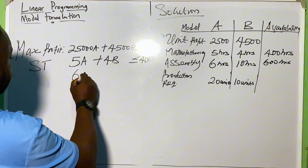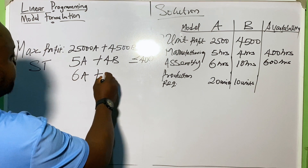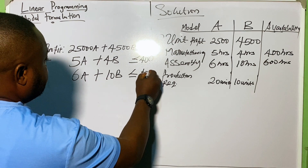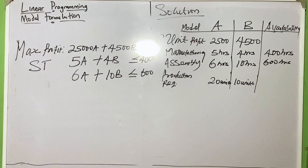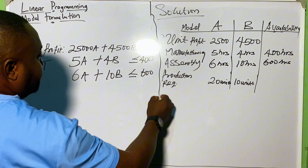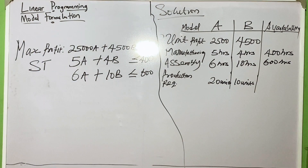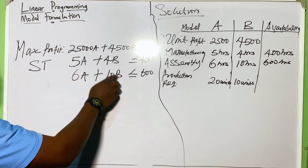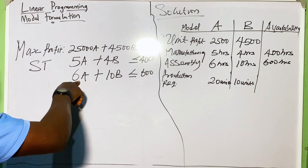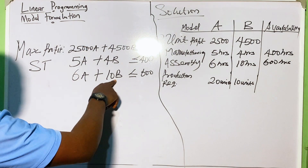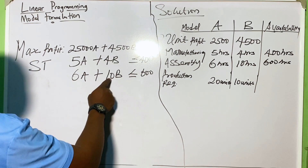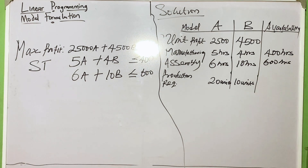For the assembly constraint: 6A + 10B ≤ 600. The same explanation applies — before you produce one unit of A you must spend 6 hours in assembly, and before you produce one unit of model B you must spend 10 hours in assembly.